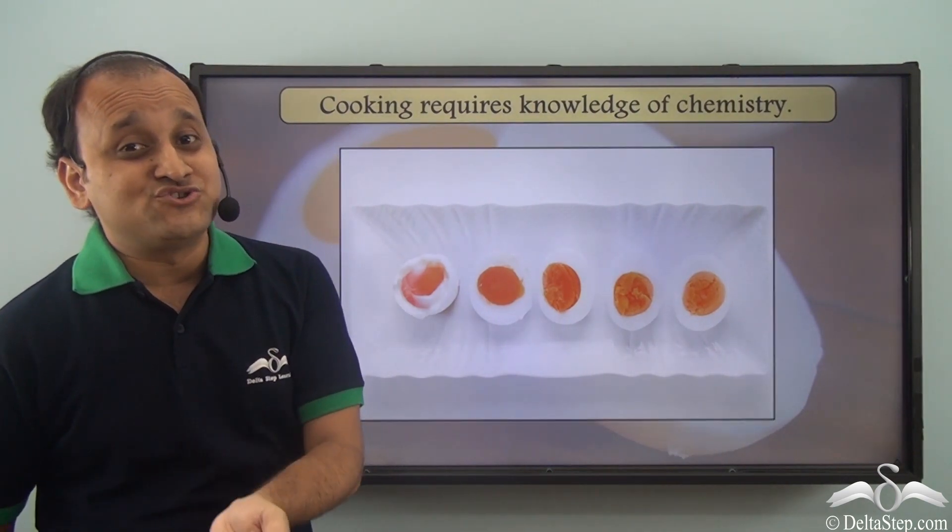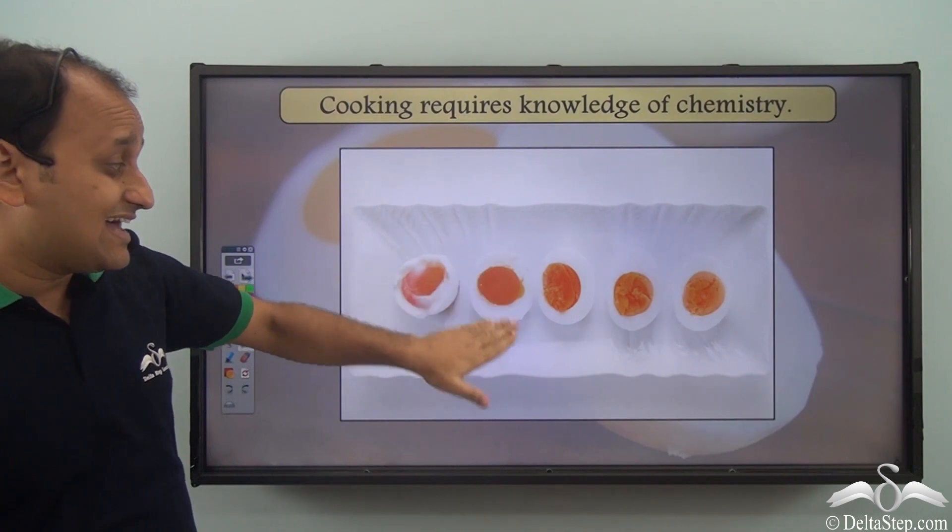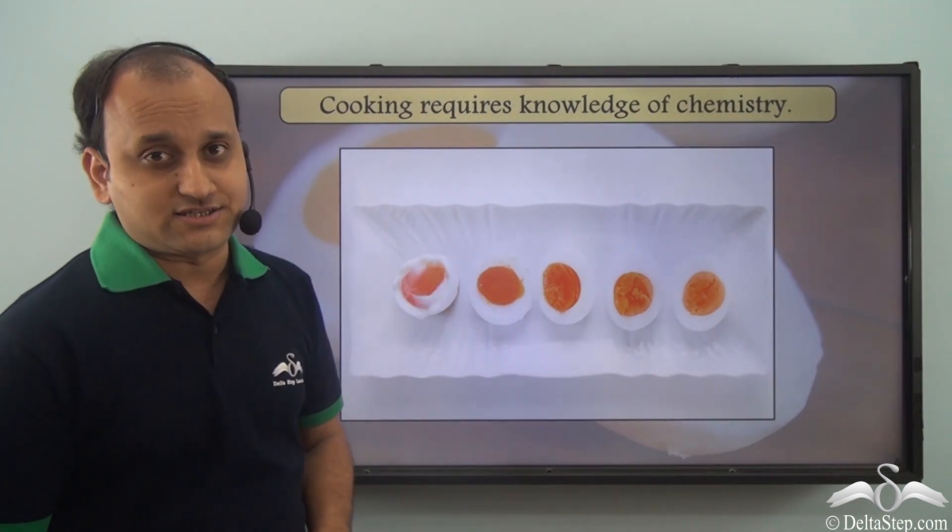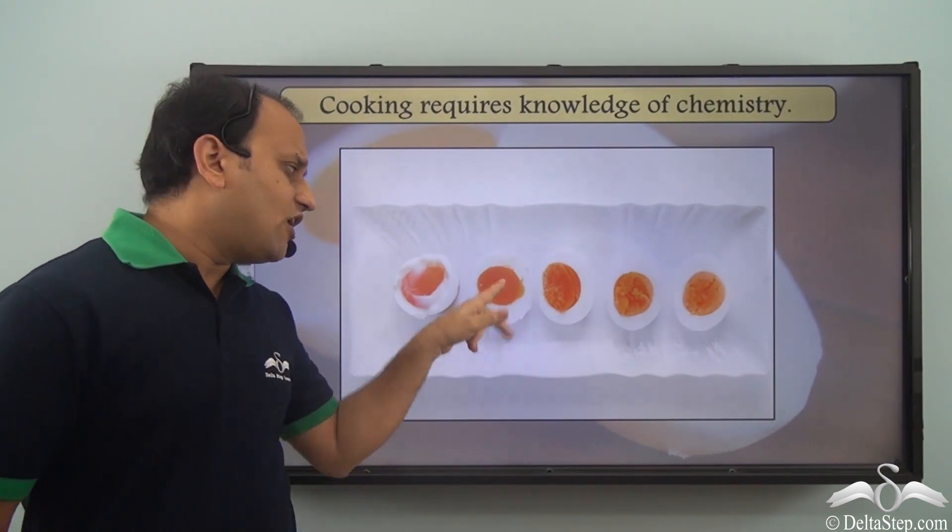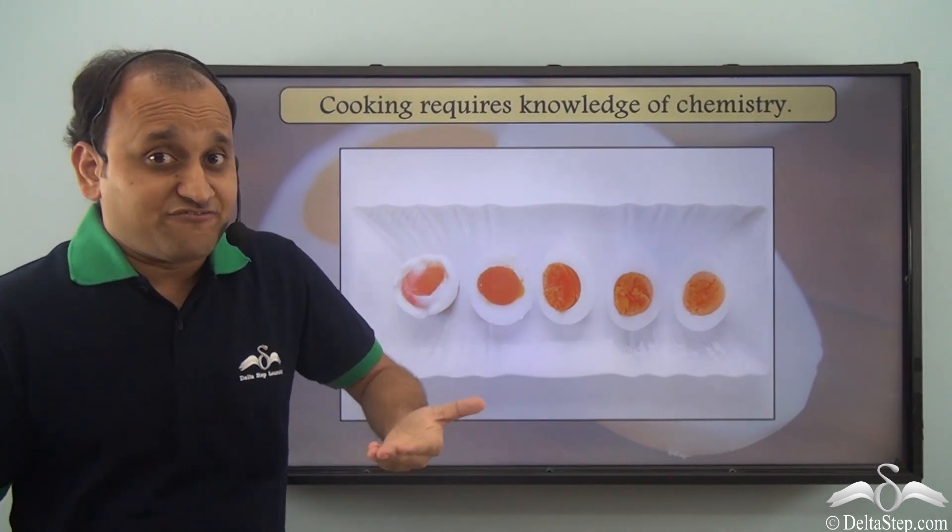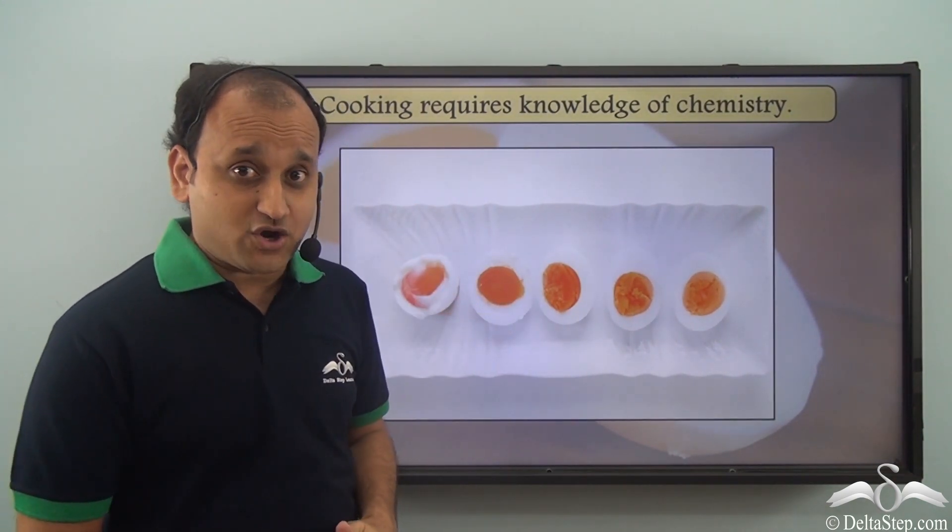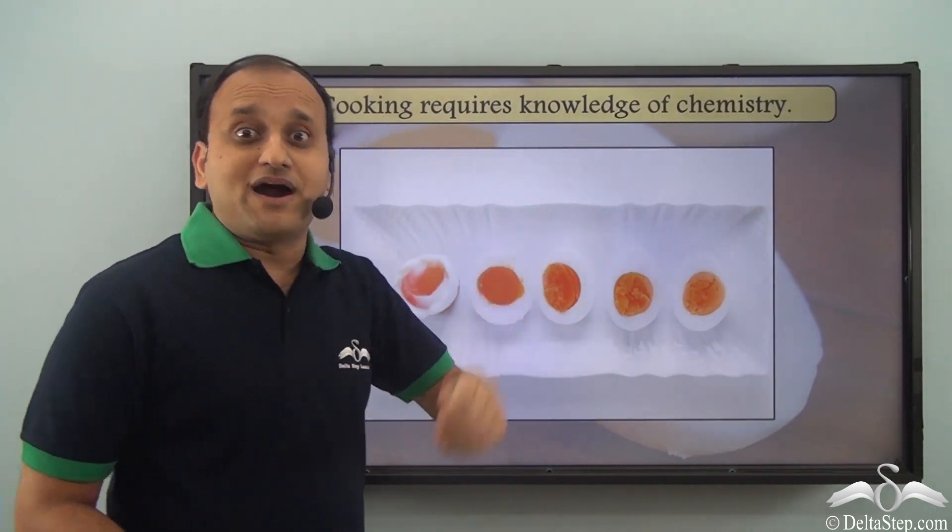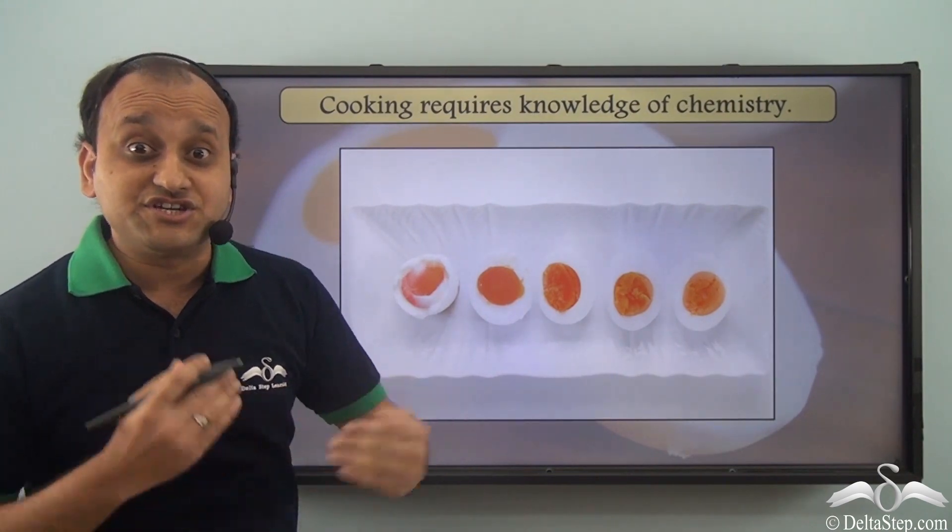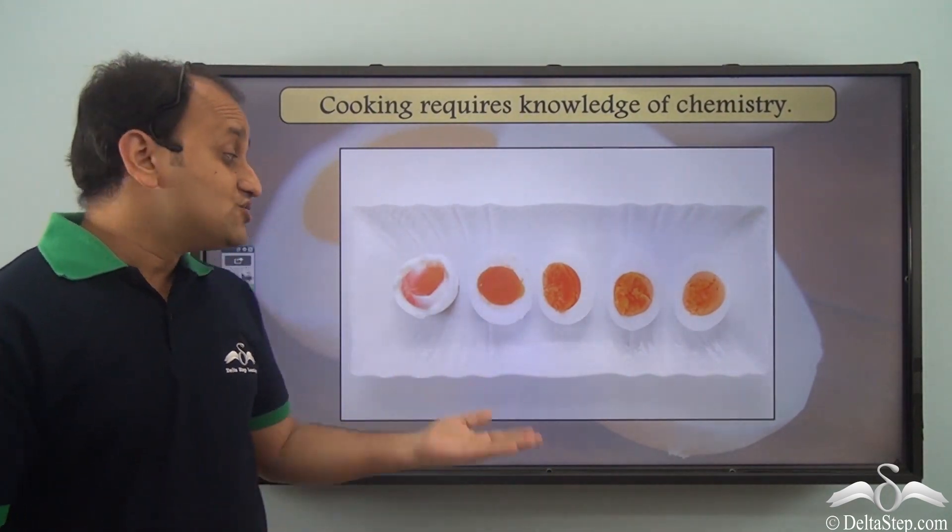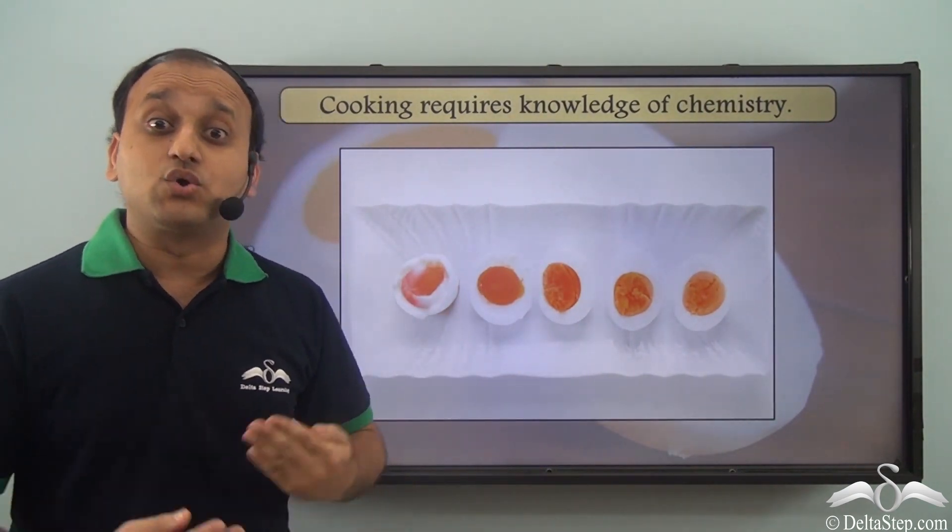Well, for that we need to know the chemistry of egg. So as you can see, egg has two major parts—the yolk and the egg white. Now whoever is a chef, he knows the chemistry of both these components. So a chef knows how much the white part needs to be cooked, how much the yolk part needs to be cooked, and accordingly a chef can adjust the temperatures or the time of cooking so that only one or both parts are cooked properly.